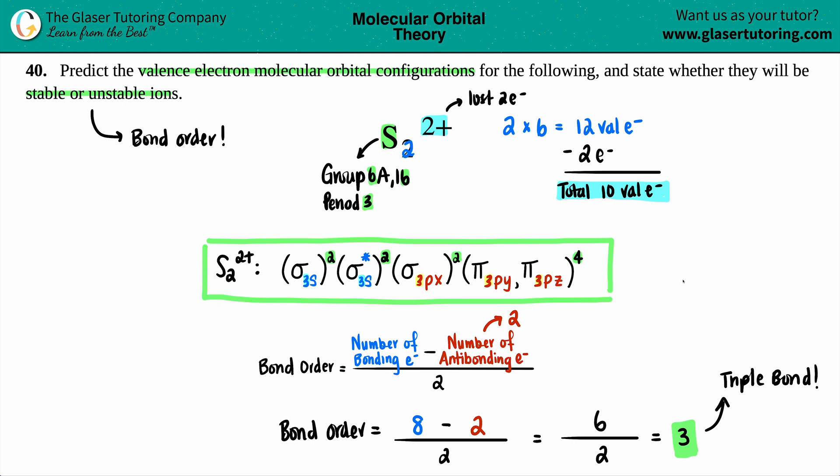Now would this be stable or unstable? Well, did we actually make a bond here? Yeah, we actually got a number - we got a triple bond, so this molecule would be a stable ion. Just to put it into perspective, an unstable ion is when your bond order would be zero. If your number is zero, that means you would not form any bond, which means that generally it would be an unstable ion. But in this case, we got a stable ion.